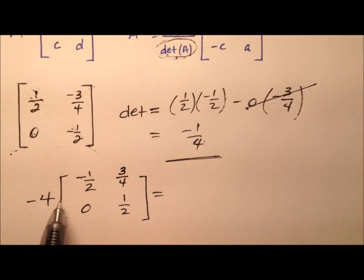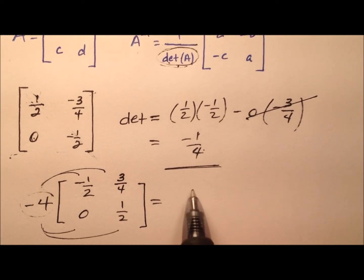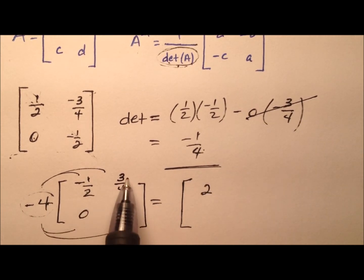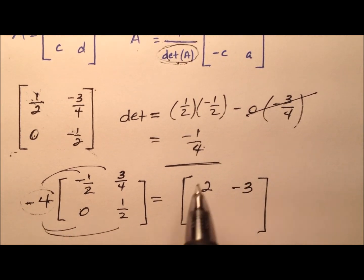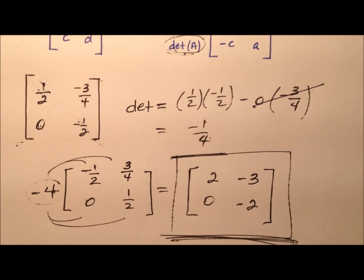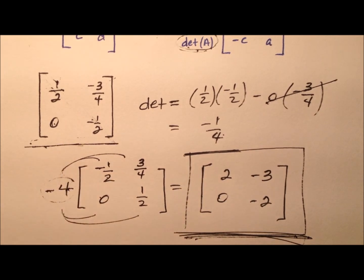Let's go ahead now and do the scalar multiplication. We'll take this negative 4 and multiply it by every single entry in this 2 by 2. So we will have negative 4 times negative 1/2, that'll be a positive 2. Negative 4 times positive 3/4, that'll be a negative 3. Negative 4 times 0, well that's just going to be 0. And negative 4 times a half is negative 2. So it looks like then this 2 by 2 square matrix is going to be the inverse of our original 2 by 2 square matrix.